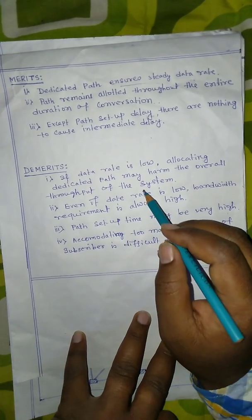This is how the overall network throughput gets harmed. Secondly, even if your data rate is low, bandwidth requirement is always high because we have a broadband dedicated path between source and destination. And as mentioned, the path setup time is very high, which is a definite problem.